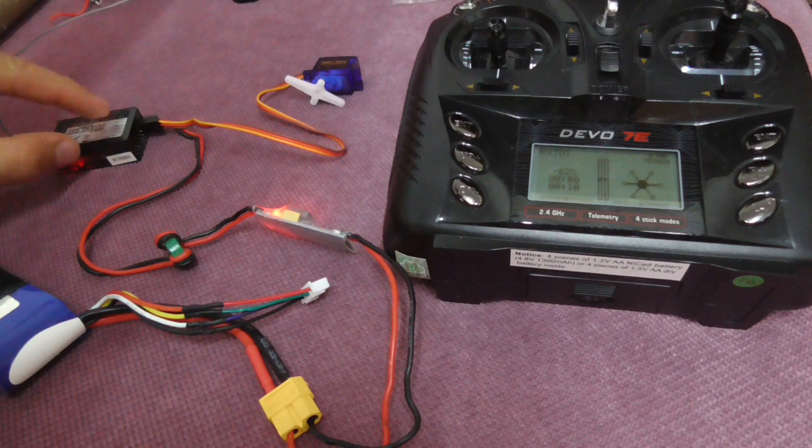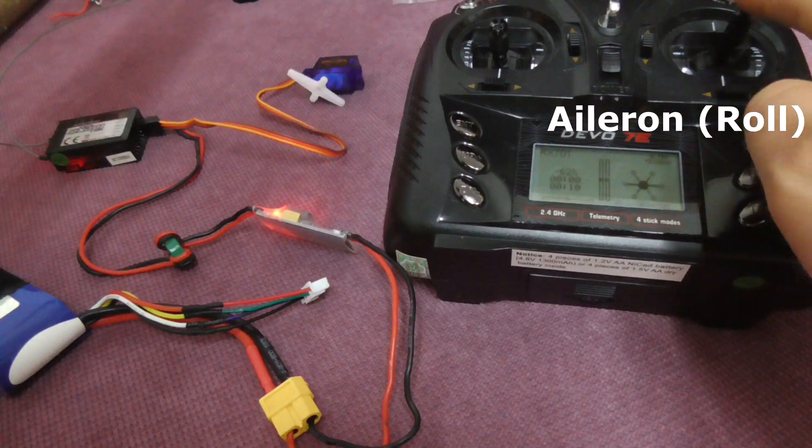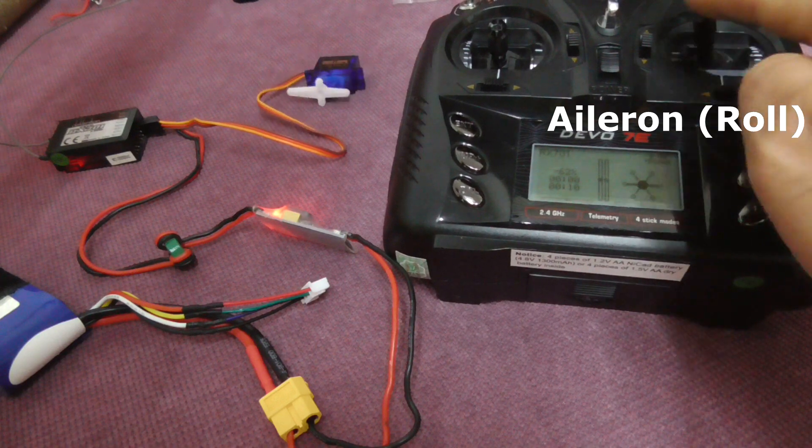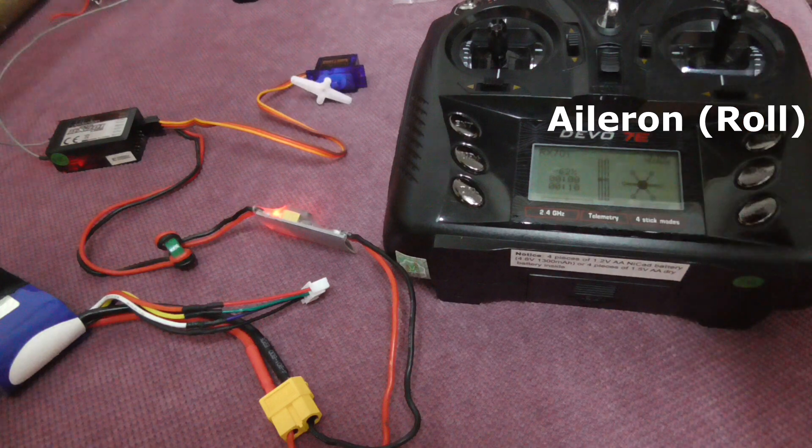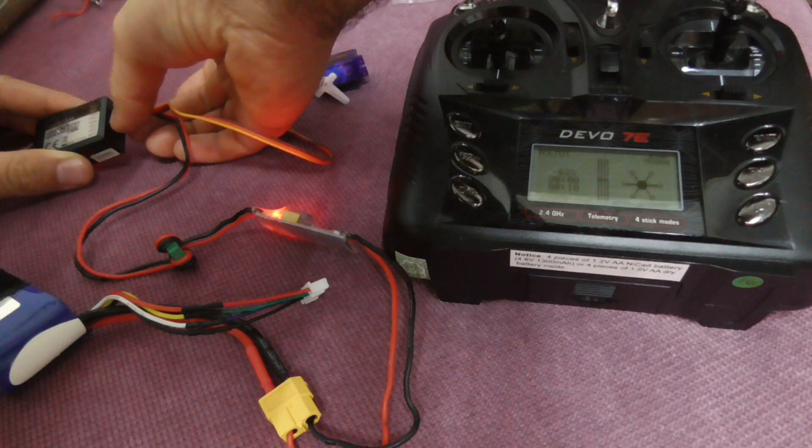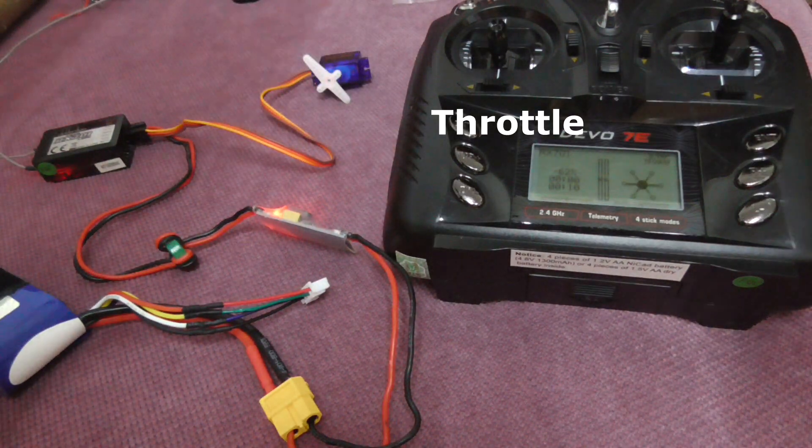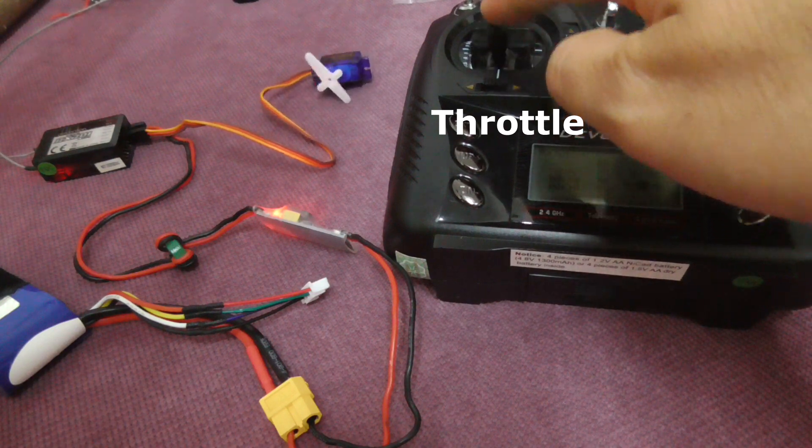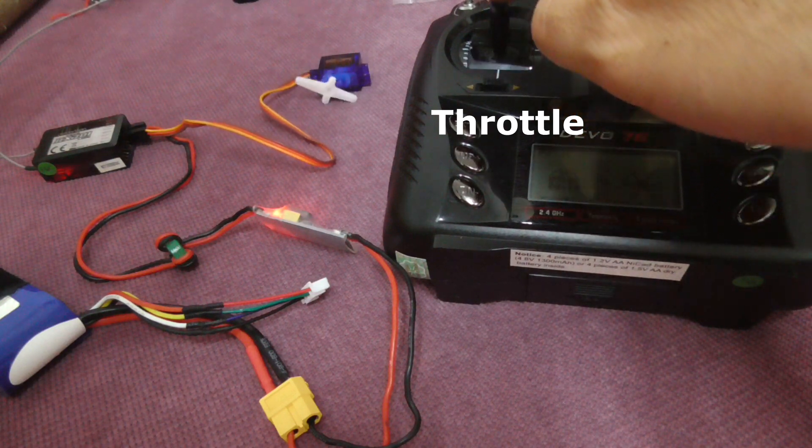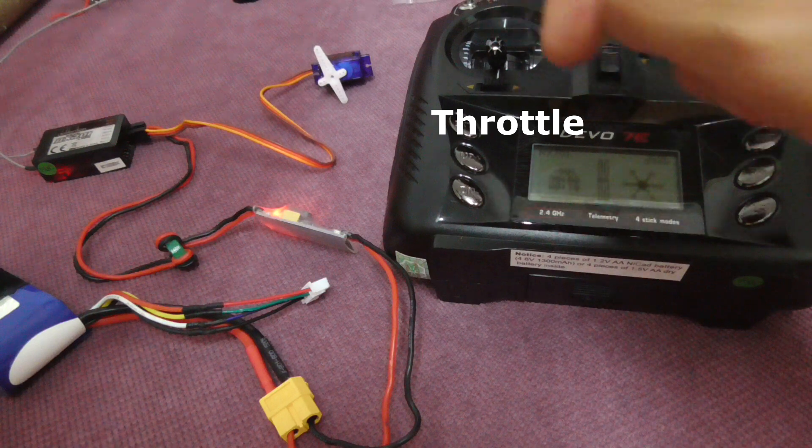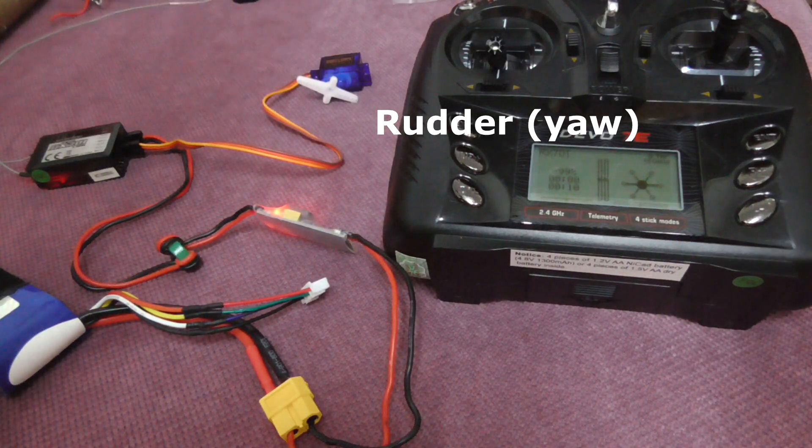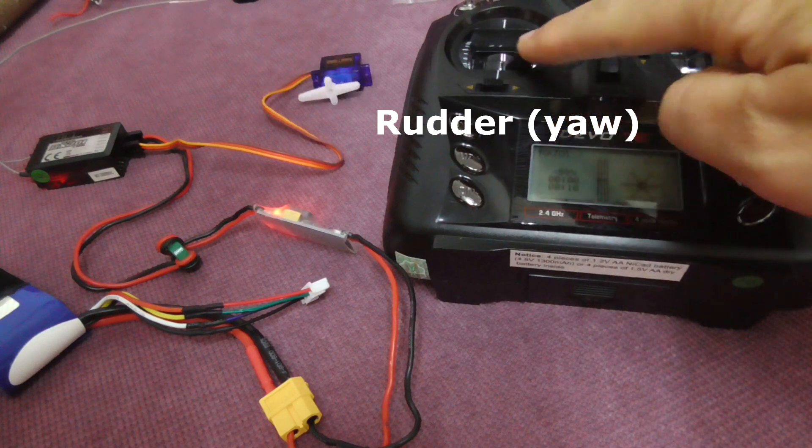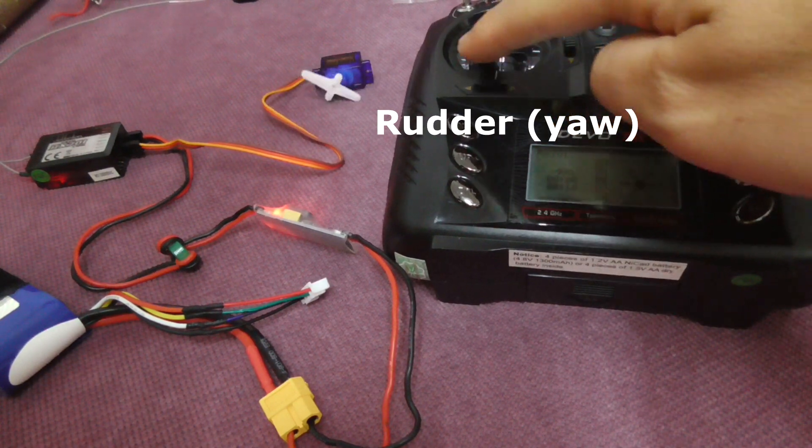Okay, and aileron is this one, left and right, which is the roll. Now it's in the throttle, throttle is this one. Now it's in the rudder, rudder is this one, which is yaw.